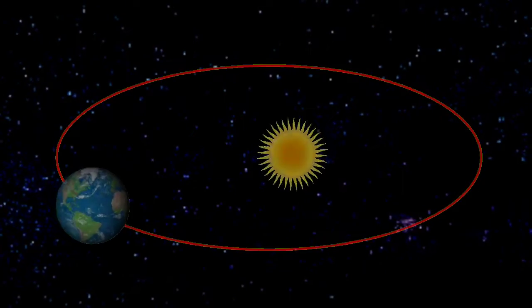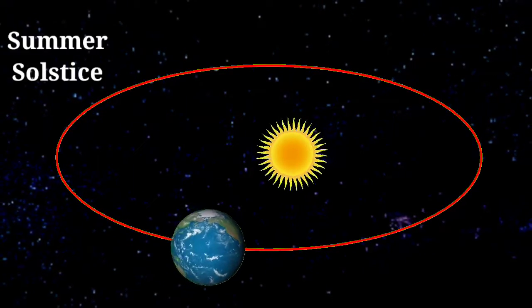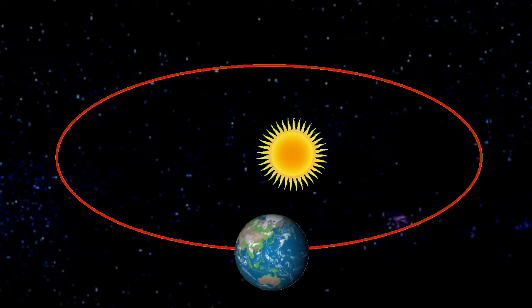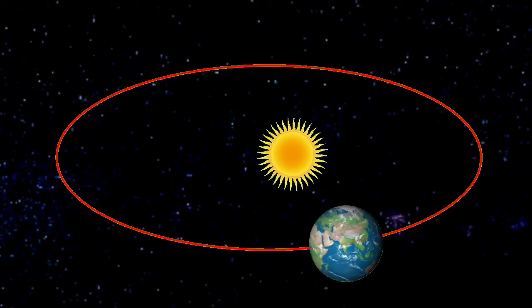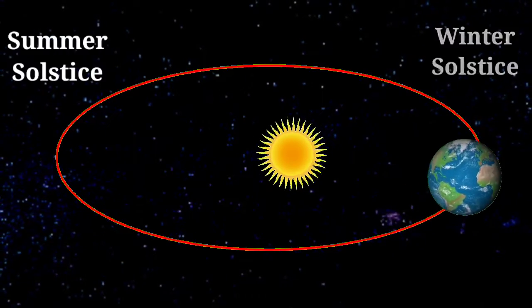Coming to another point, summer solstice and winter solstice. Here solstice means one of the earth's poles, it may be north or it may be south, at its maximum tilt towards the sun. And therefore,